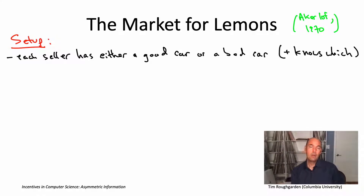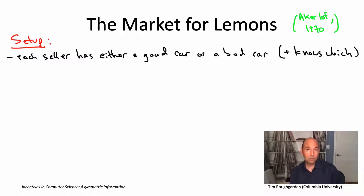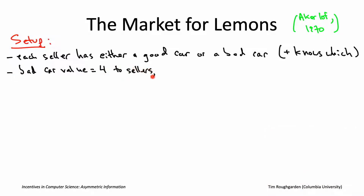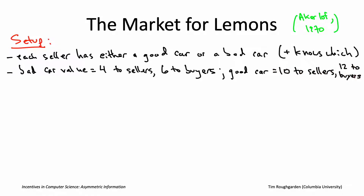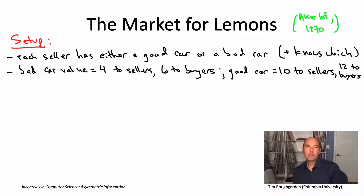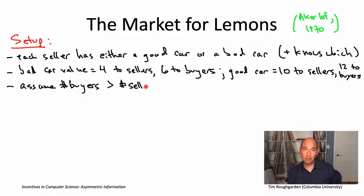We also have buyers who are willing to buy a bad car for up to six — which is plenty for what the sellers would accept — and similarly, buyers would be willing to buy a good car for twelve. Let's also assume for concreteness that there's more demand than supply, so there are more buyers than sellers. This is just for concreteness and is not an important assumption.